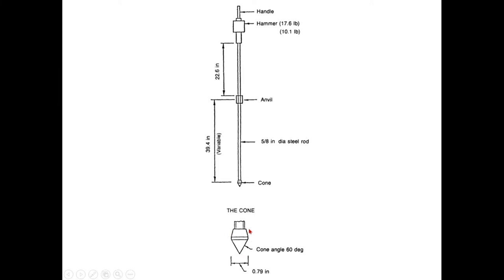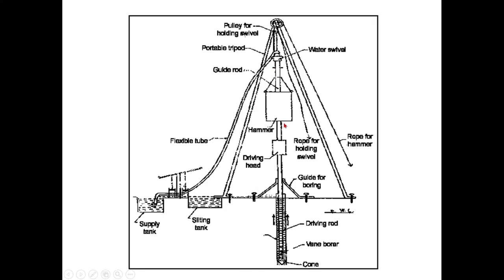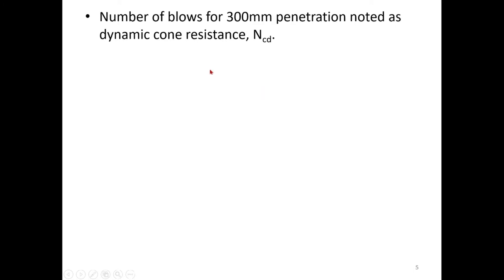You just find out the penetration resistance of the cone for a hammer of 65 kg free falling from a height of 750 mm for the specified dimension cone. The number of blows for 300 mm penetration is noted and designated as NCD, or dynamic cone resistance. You measure 100 mm, 100 mm, 100 mm — three times — sum it up and get the N value for the cone penetration test.